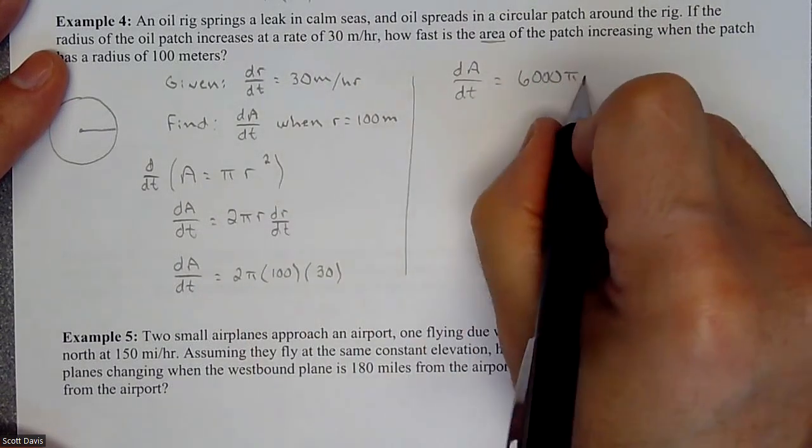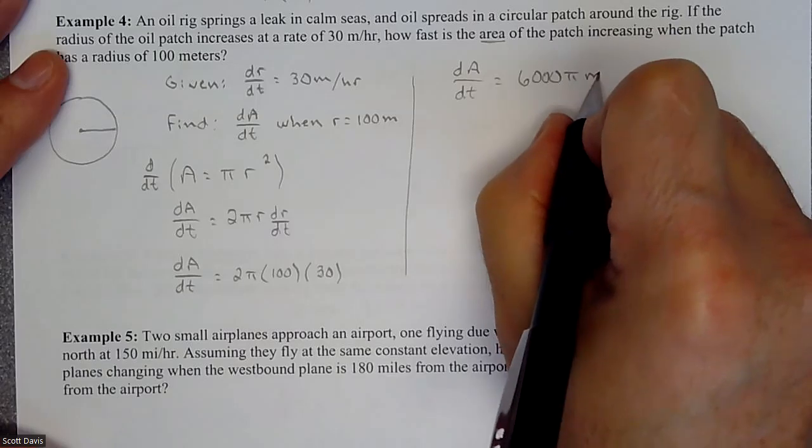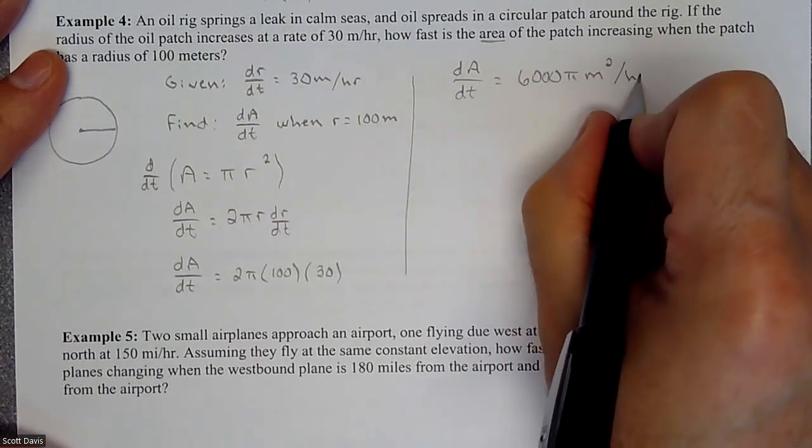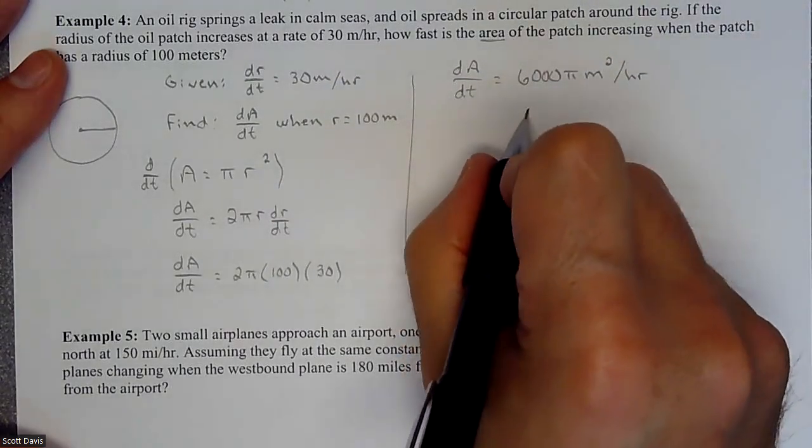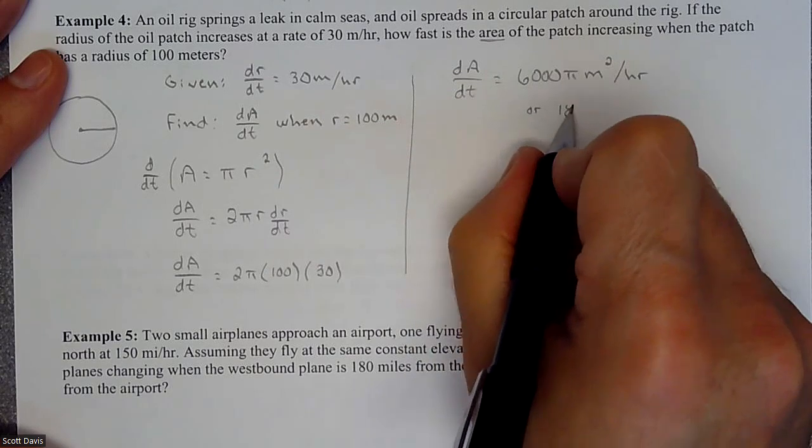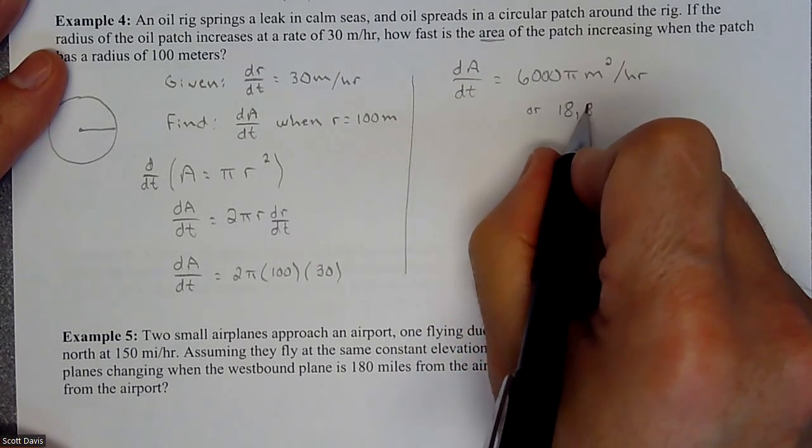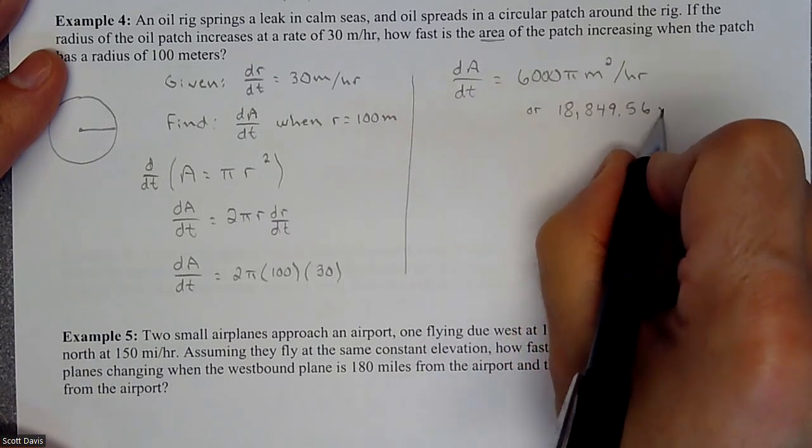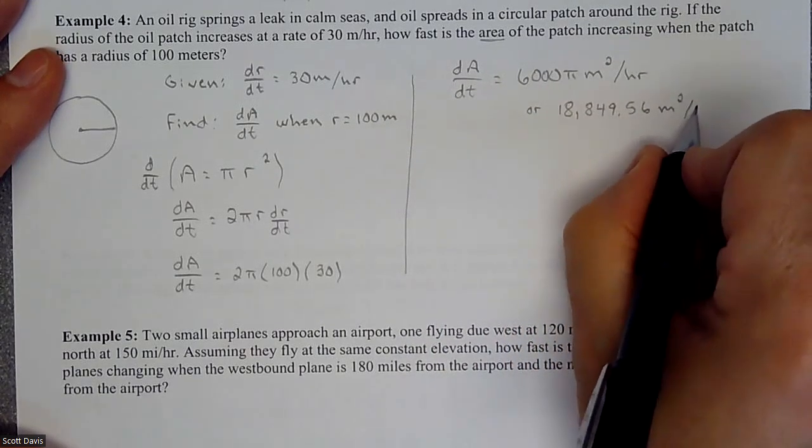And we're talking about meters but we're talking about an area so square meters per hour, which is approximately 18,849.56 meters squared per hour.